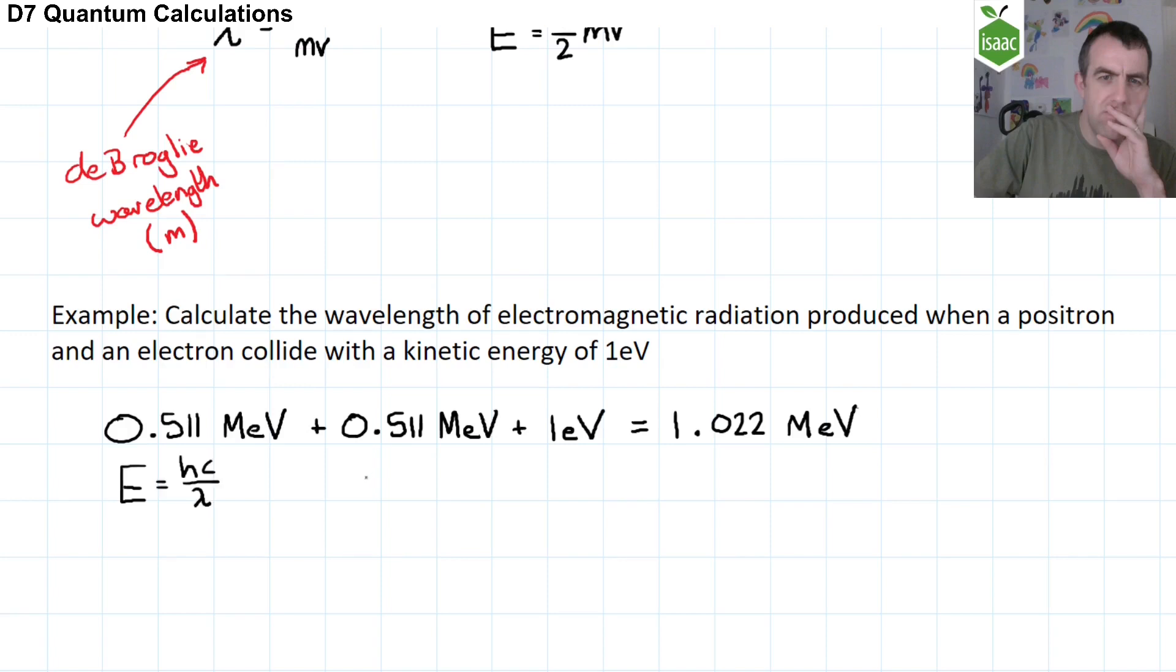However, there are two things we should be aware of. Firstly, this annihilation event is going to produce two photons, and so half of this energy will go into each photon. And secondly, this energy must be in joules first.